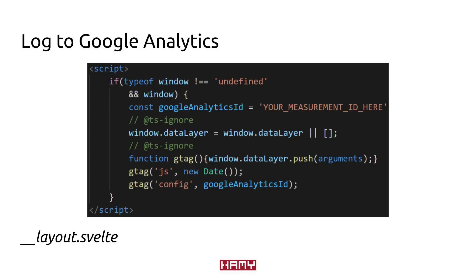Now that we have the library on our site, we need to actually use it to log data back to Google. To do this, we're going to be using a script tag within that same layout file so that we can run the script on every page load. The first thing we're going to do is check if the window is defined — this is a defensive maneuver against server-side rendering. If this page were to run server-side, we wouldn't have the library loaded and this would result in an error. By first checking if the window is loaded, we won't run into this edge case. Once we know that we have a window available, we're going to instantiate the Google library with gtag, then log our measurement ID to it, which sends all of that data to Google in a way that it will know how to aggregate it.